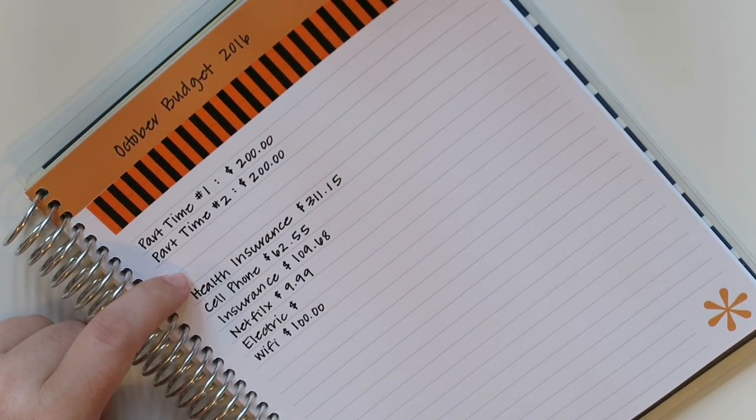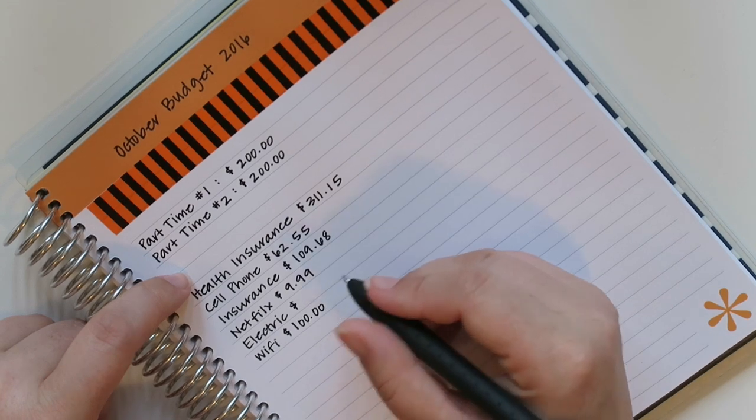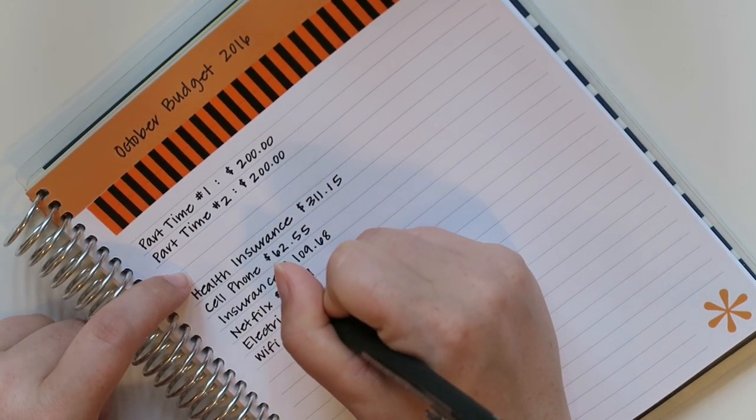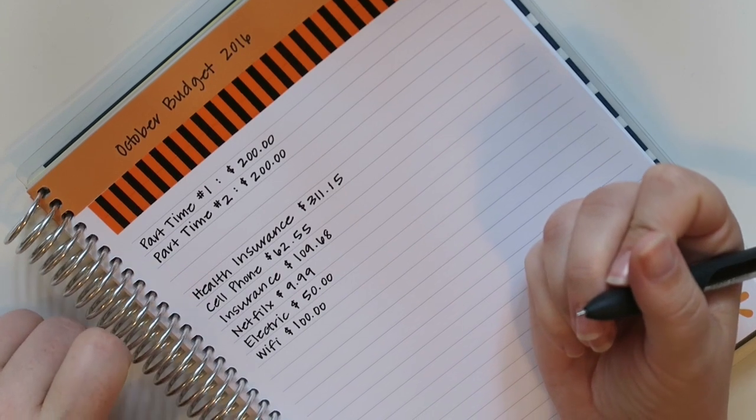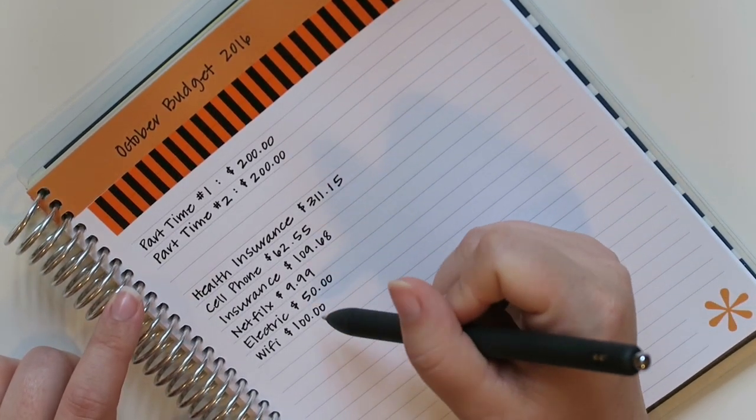So I'm going to budget for around a hundred dollars, which is just fine. And then the electric, I'm pretty sure is going to be around the $50 mark. I can't imagine that it's going to be any more than that. So I'm not going to be putting my master card on here.